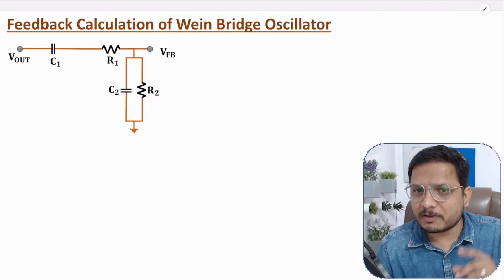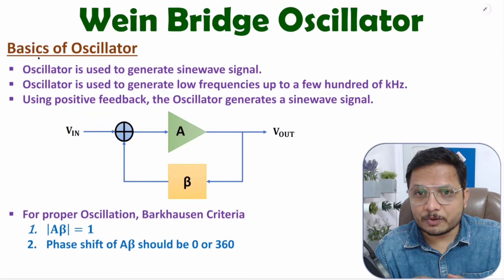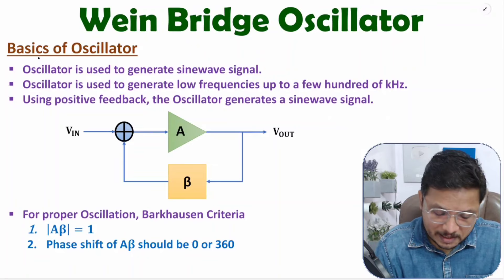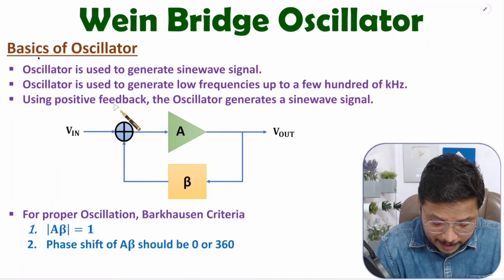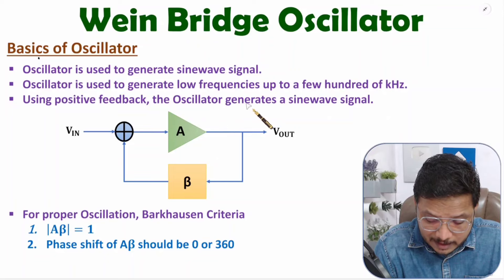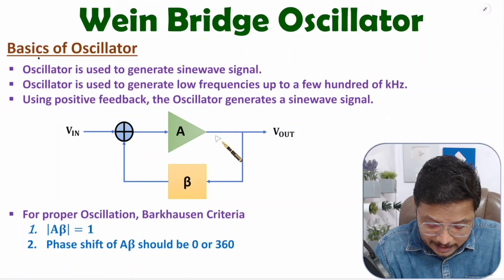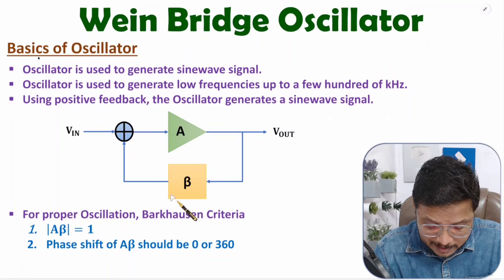Let us begin with the first agenda: basics of oscillators. Oscillators are used to generate sinusoidal waveforms, and they can generate low frequencies up to a few hundreds of kilohertz. Using positive feedback, an oscillator generates sinusoidal waveforms. In the basic block diagram of an oscillator, we have two components: an amplifier with gain A and a feedback network with gain beta.